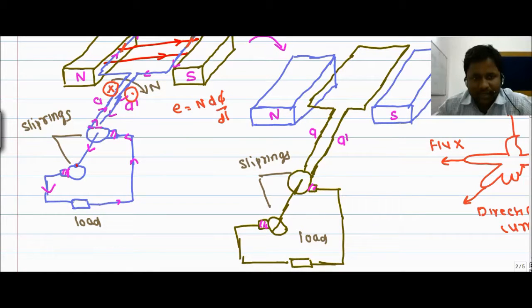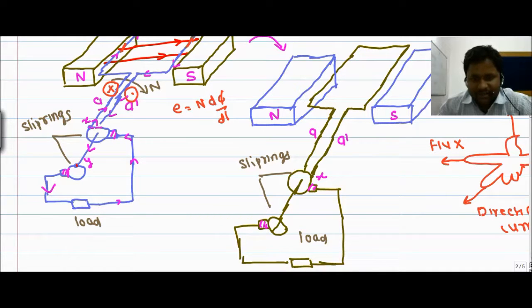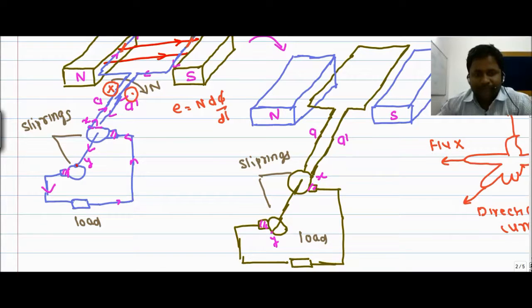Suppose this is point X and the X position is going to be like this fashion. Similarly, if this is point Y, then the Y position changes. After half cycle, A will interchange — conductor A and A dash swap positions.